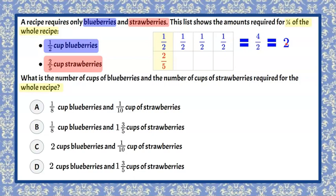Four divided by two is two. So we know that for one-fourth of the recipe, it's a half a cup of blueberries, but for the whole recipe, it's two cups of blueberries. Let's look at our answer choices. We can see that A is incorrect because they said one-eighth of a cup. B is incorrect because it said one-eighth of a cup. And C and D both say two cups of blueberries.